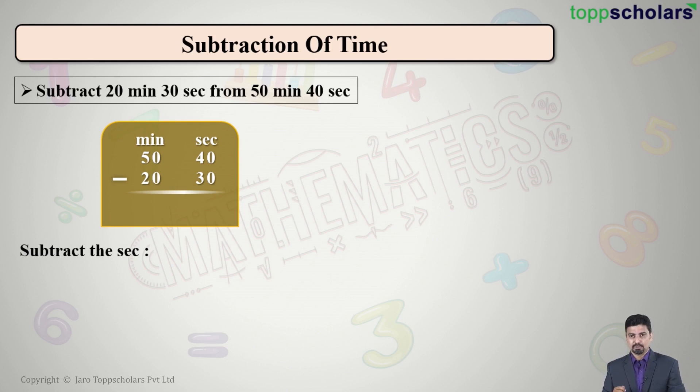So now first you will tackle the seconds part of it. So we have 40 seconds minus 30 seconds, simple answer 10 seconds. Write down 10 below the seconds column. Then we move ahead to the minutes section. So subtract the minutes again, 50 minutes minus 20 minutes. What will be the answer? 5 minus 2, yes it is 3. That is 50 minus 20, yes it is 30.